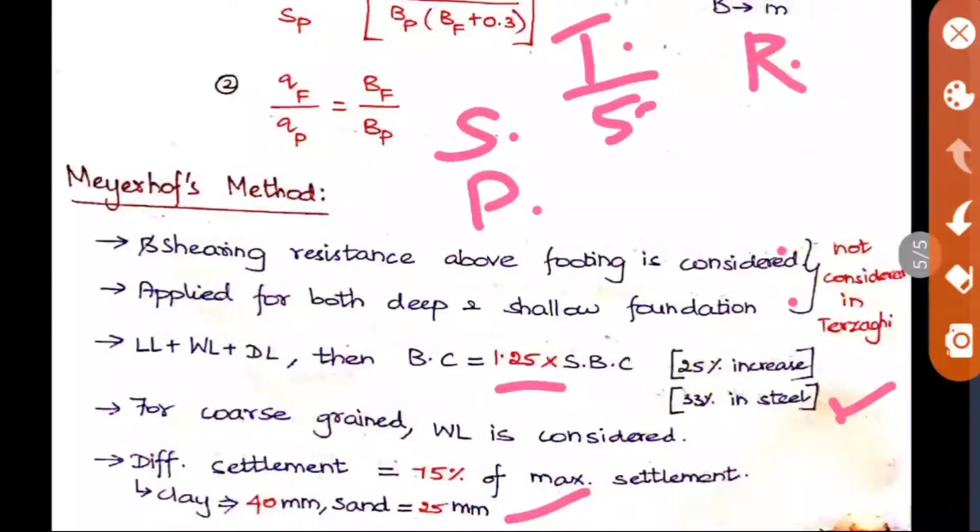Isolated foundation, raft foundation, and this is for sand and hard clay and plastic clay. So now we can write like this: it is 50 mm, 75 mm, 75 mm, and 100 mm. When it is isolated foundation in plastic clay, then 75 mm is your allowable settlement. When it is raft foundation in sand, it is 75 mm. So like that you can choose the answer.